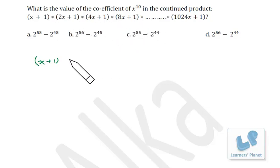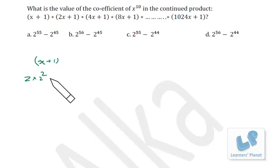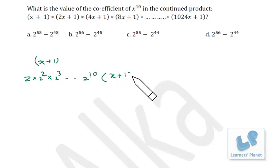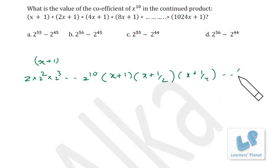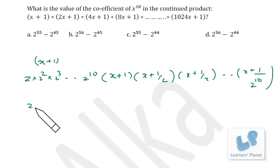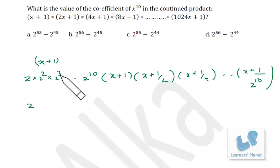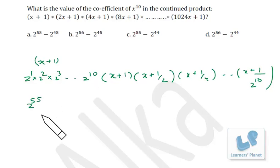Take 2, 2 squared, 2 cubed, and so on as common factors. Starting from 2 raised to 0: 2 × 2² × 2³ × ... × 2^10, we are left with (x+1)(x+1/2)(x+1/4)...(x + 1/2^10). The product of the taken-out powers is 2^(1+2+3+...+10) = 2^55.